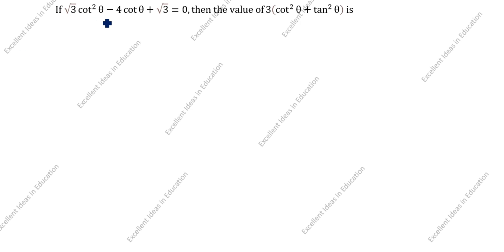Hi friends, welcome to my channel Excellent Ideas in Education. Today we are going to solve this trigonometry problem. If root 3 cot squared theta minus 4 cot theta plus root 3 is equal to 0, then the value of 3 open the bracket cot squared theta plus tan squared theta is — we will find this value.